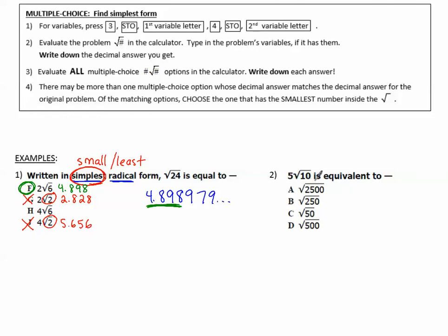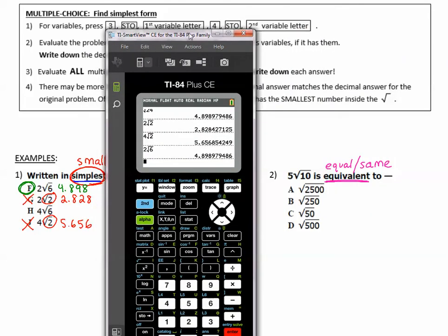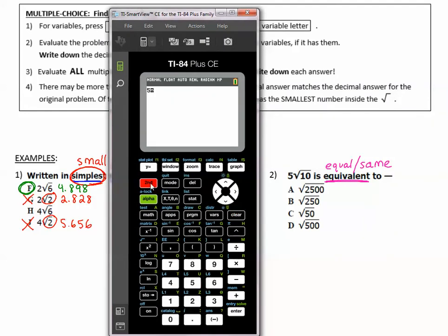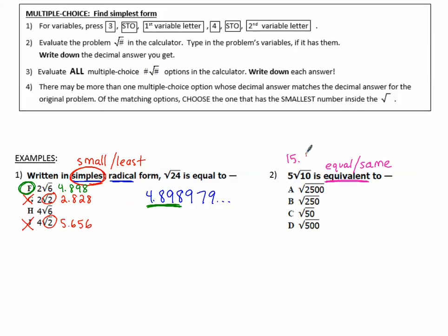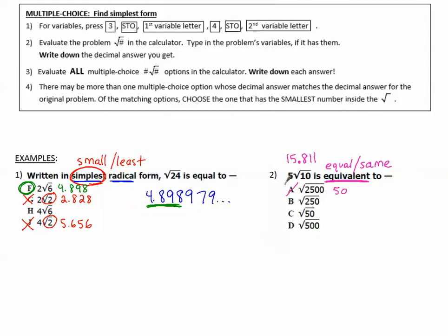Number 2. 5 square roots of 10 is equivalent to. The word equivalent means equal, which means the same. So like I did the other one, I'm going to type in the original problem first. 5, second x squared, 10. Let's write down that value, 15.811. Now I'm trying to see which one matches. This time it doesn't say simplest, so I'm just going to type in each of these choices. Second x squared, 2500, that gives me 50. So because 50 does not match this, this is not the correct answer.